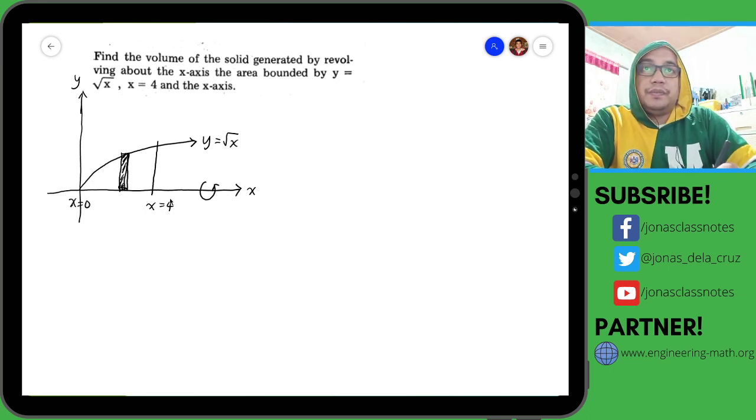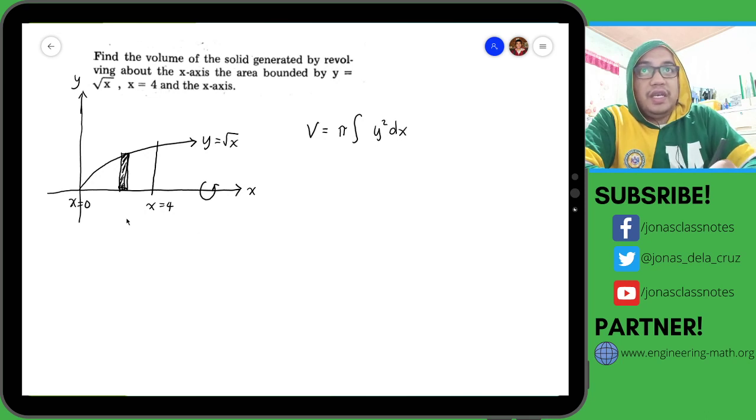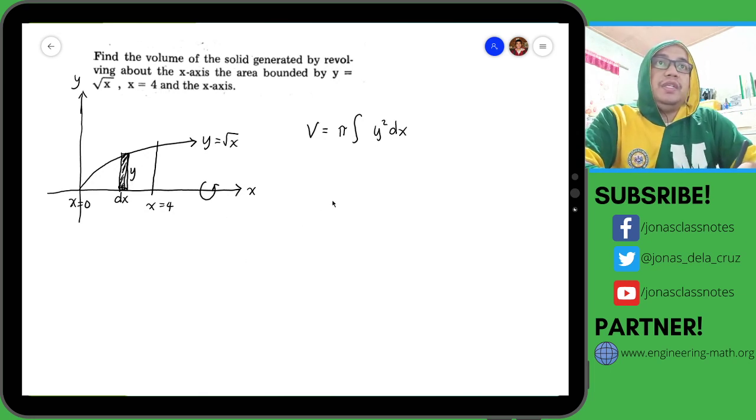The formula for the volume is V equals π times the integral of y squared dx. dx is the thickness of our circular disk, and y is actually the radius of the circular disk.